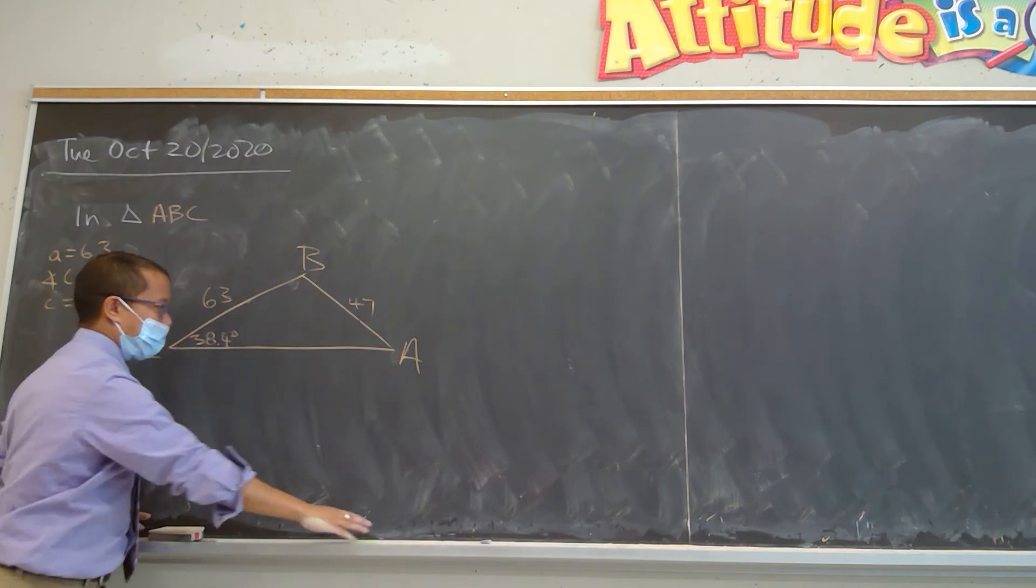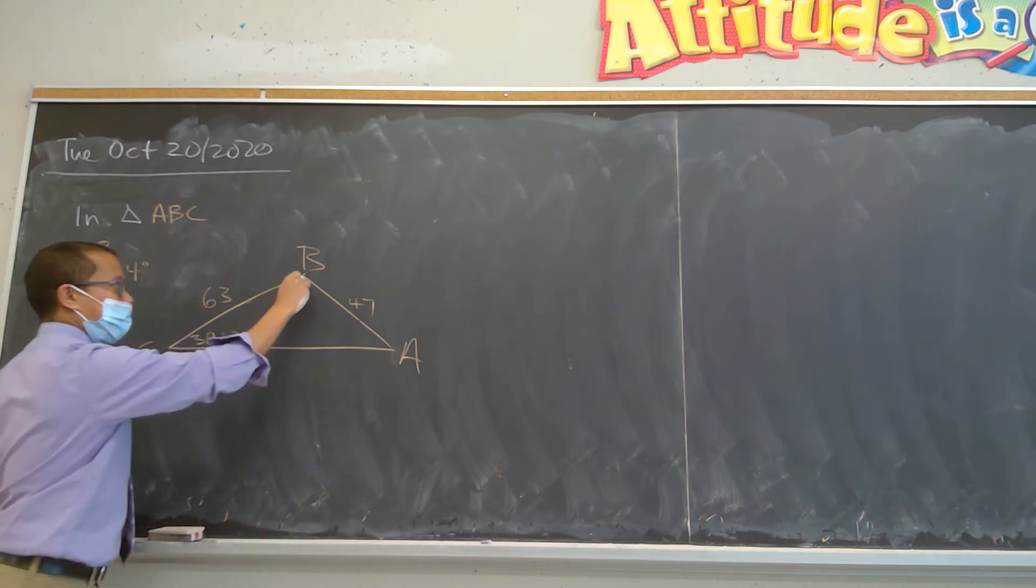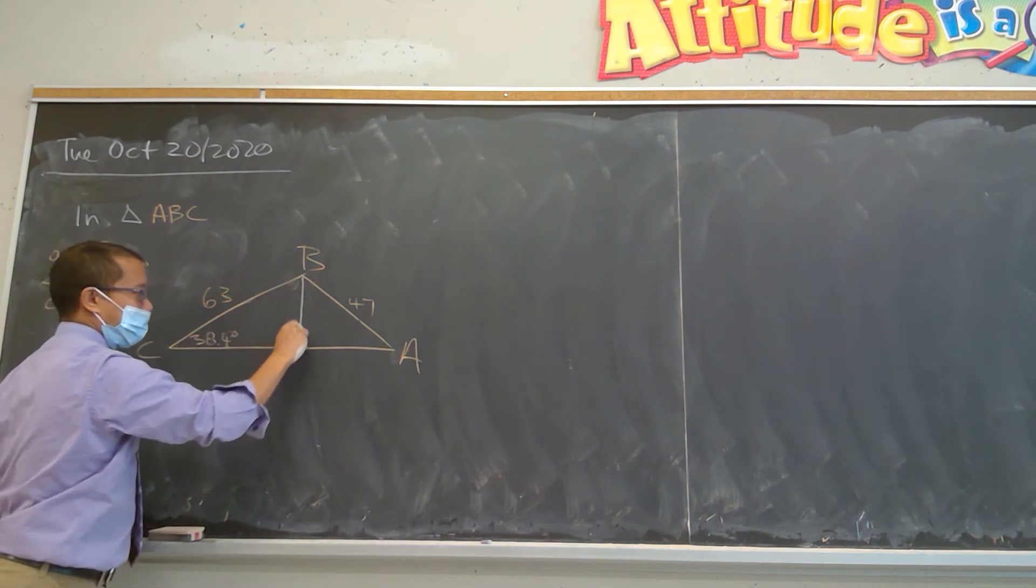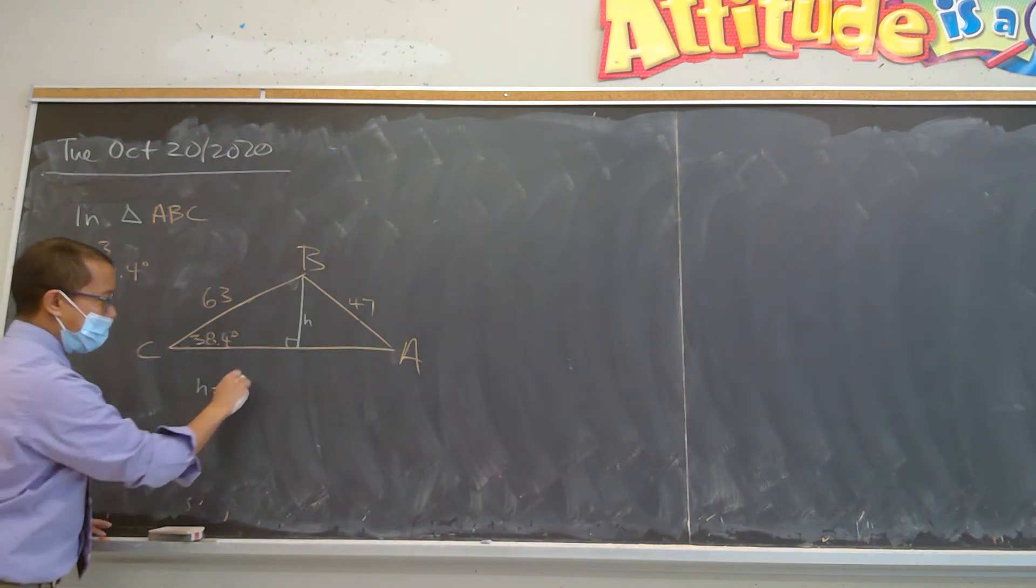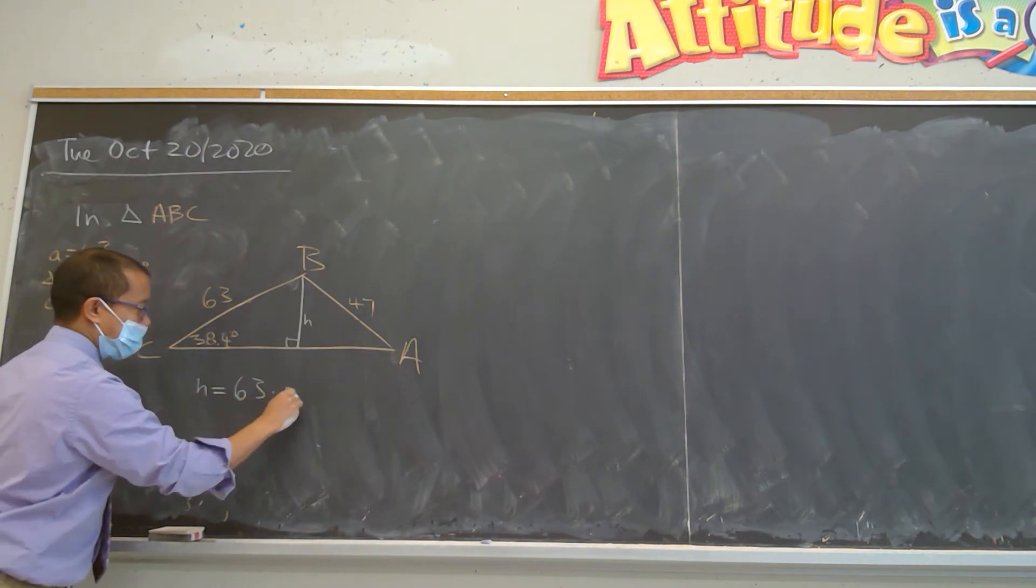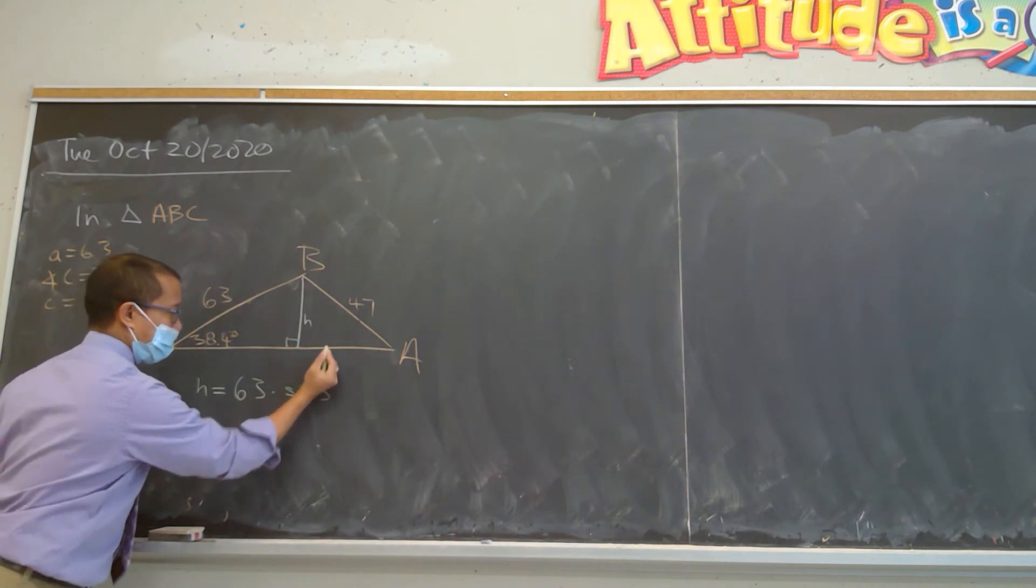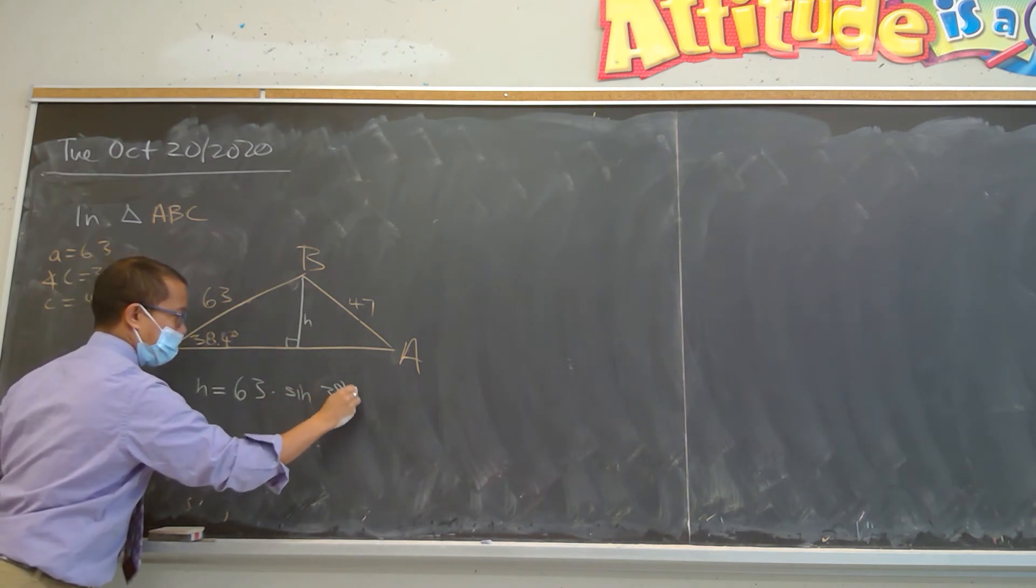I'll solve for the height using green chalk. It's going to be 63 times the sine of 38.4 degrees.